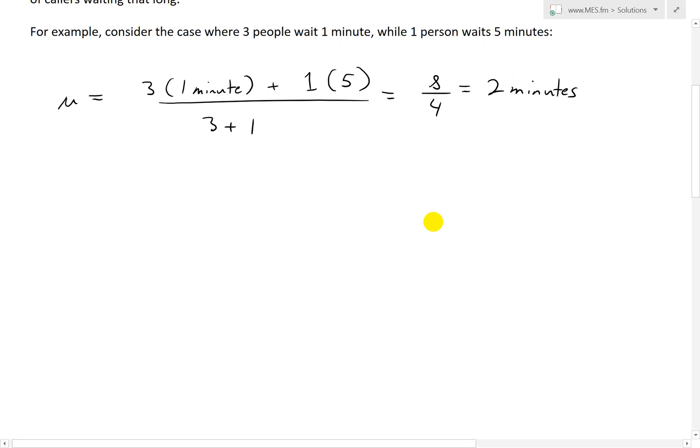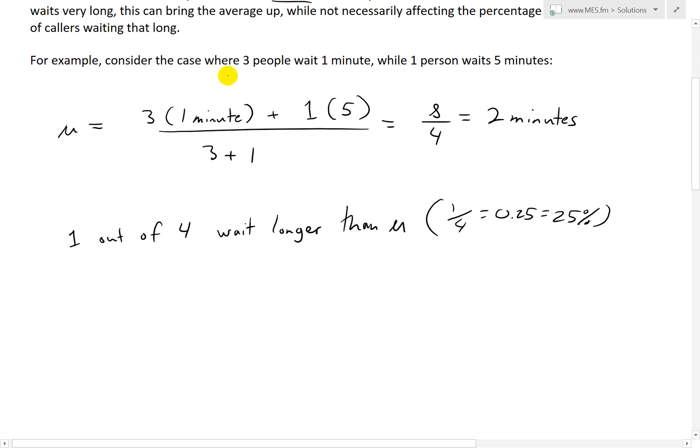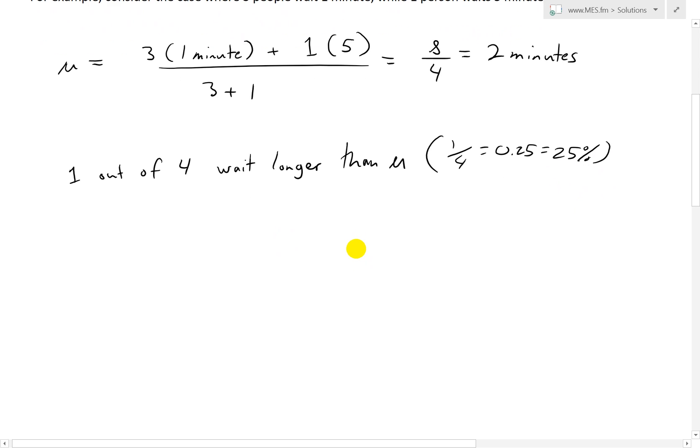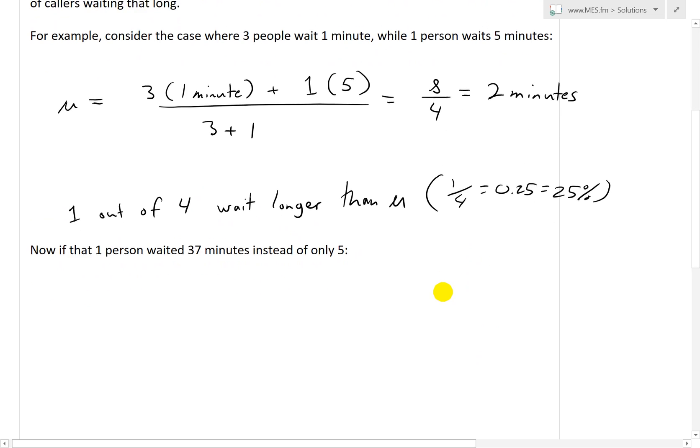So even though this is 2 minutes, if you look at the number of people, 1 out of 4 wait longer than this average mu. In other words, 1 out of 4 equals 0.25 or 25%. Because you have 1 person waiting 5 minutes and 3 people waiting 1 minute. So even in this case, you don't have a 50-50 split.